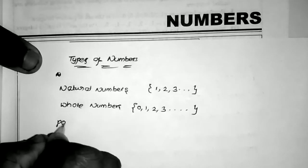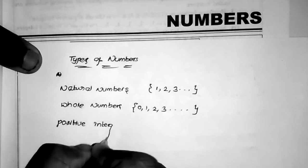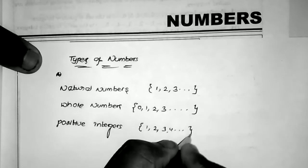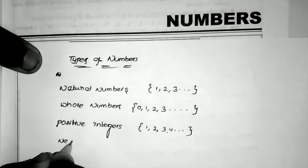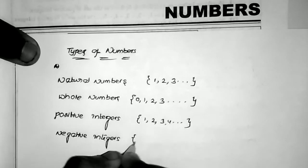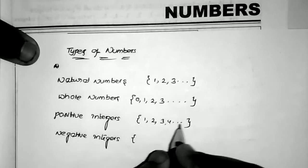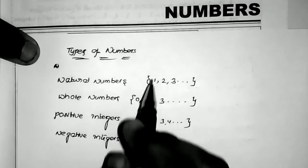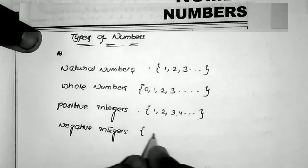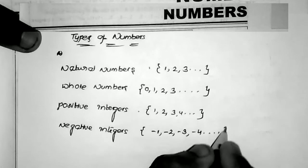Next are positive integers. Positive integers are the numbers 1, 2, 3, 4 and so on. And negative integers — negative integers means taking the negative sign: minus 1, minus 2, minus 3, minus 4. These are the negative integers.